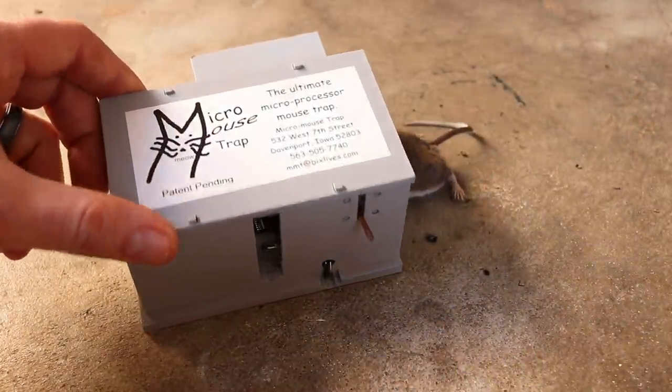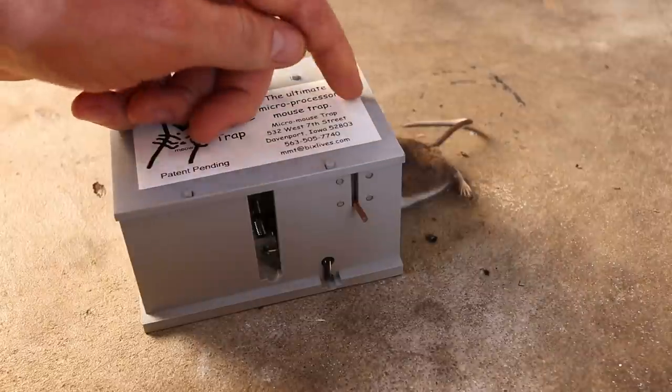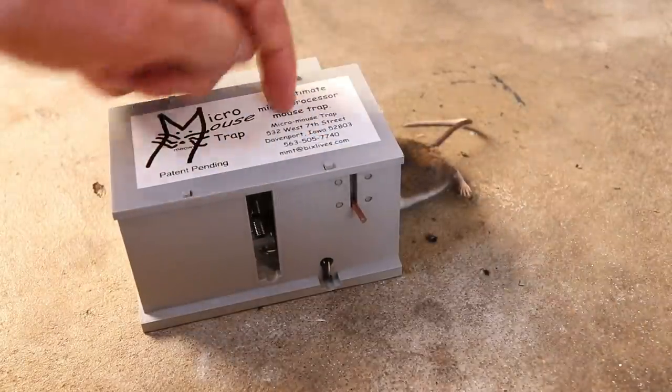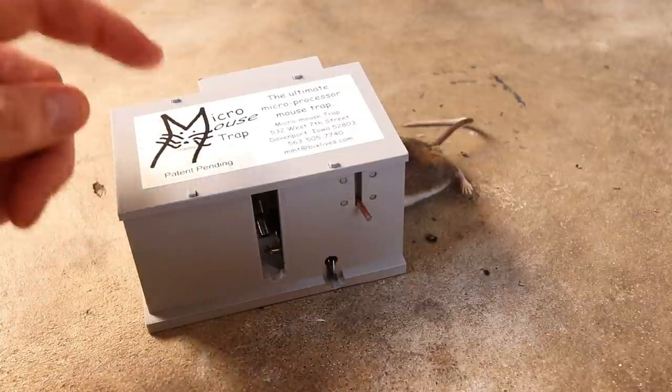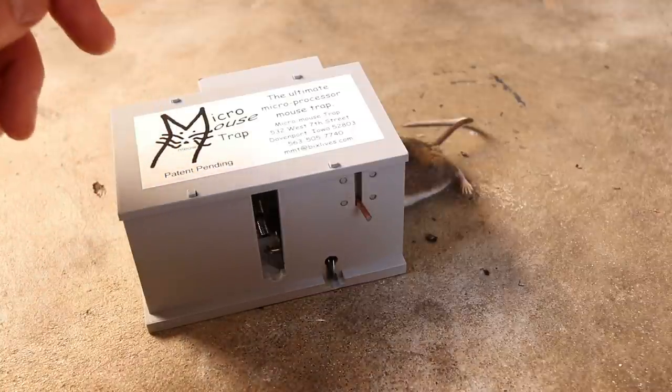Last night I set up the micro mousetrap in the barn and it worked well. We got a mouse. It wanted the bait, went in there, tripped the sensor, released the kill bar, and got caught. No stealing the bait on this one. It worked perfectly.